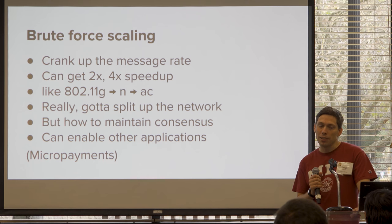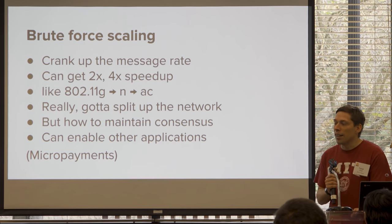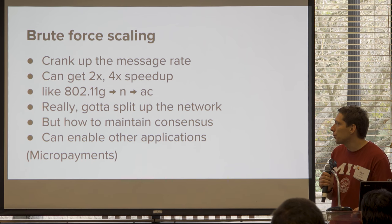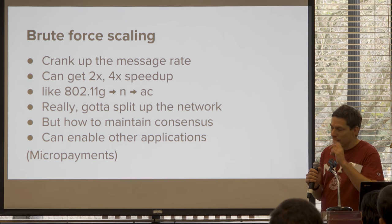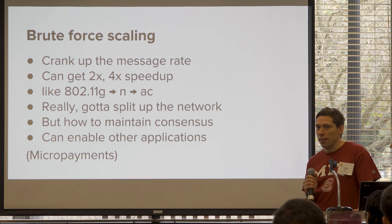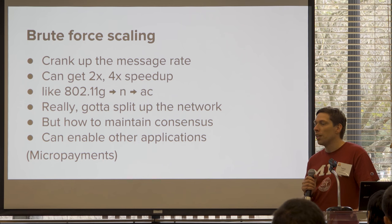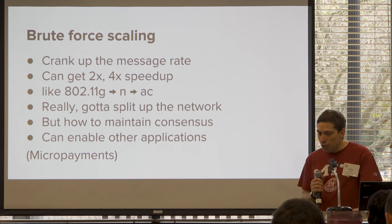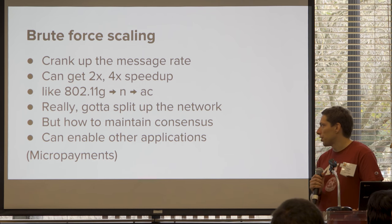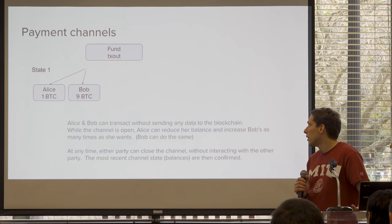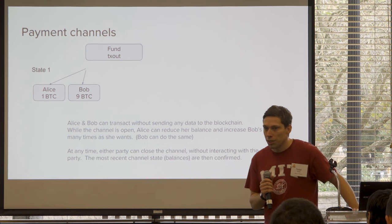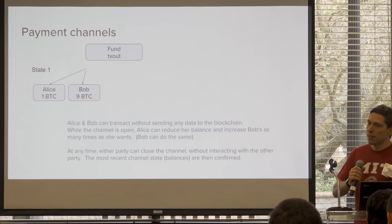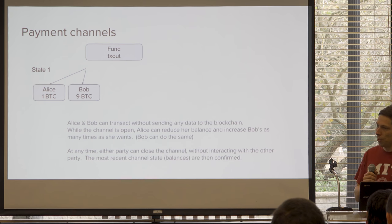But how do you do that in Bitcoin and maintain consensus? If everyone's got a different view of who's got what money, it doesn't really work. But if you could, you could enable a lot of cool applications like micropayments. The way we do this — what Lightning Network is built on — is called payment channels. The idea is two participants, Alice and Bob, send money to a shared address. This address is two-of-two multisig, so Alice and Bob both need to sign to spend from it.